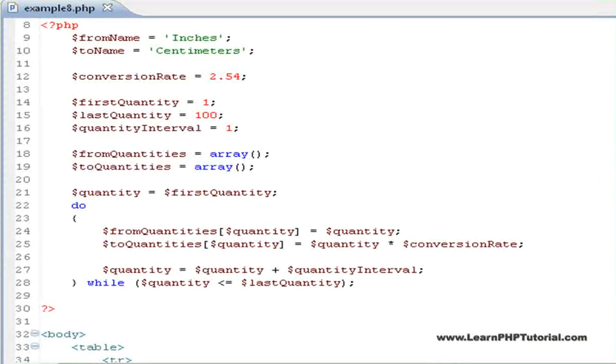In about the same amount of code as before, we're now initializing the array with 100 sequential values and their conversions. That's the power of loops. Whenever you find that you're writing the same thing over and over again, chances are it's a good place to use a loop. Let's have a closer look at the changes.